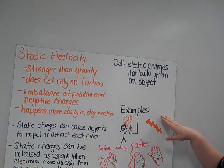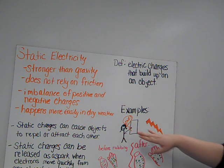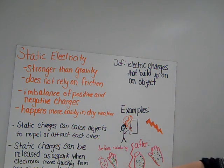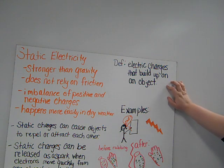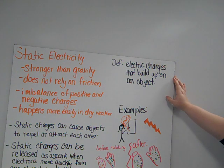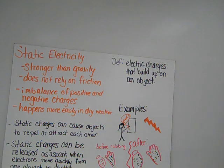Some other examples of static electricity are when you touch a door handle and get a shock, lightning, and when you rub something and build up electrical charges. We'll talk more about electricity next time.